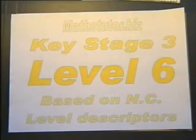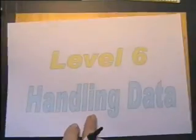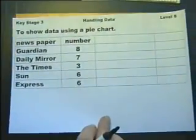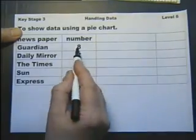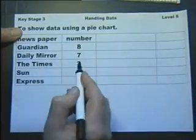Key Stage 3, Level 6, and here we go with handling data. We should be able to show information on a pie chart. So here's some information to show on a pie chart. The number of people that bought particular newspapers.